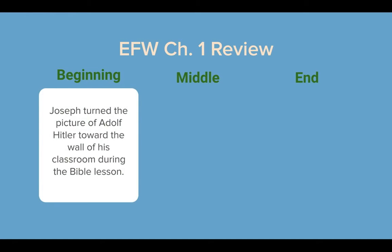In the beginning of the chapter, remember Joseph was teaching his class. He was in the middle of teaching a Bible scripture lesson. He turned the picture of Adolf Hitler that the Nazis had hung — they had hung one of these pictures in every classroom in Poland — and during his Bible lesson, he turned that picture over to face the wall.